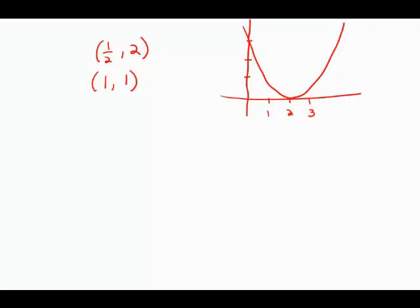First of all, the question tells us about two points that are on the graph: one half comma two, and one comma one. Then it tells us this crucial piece of information: the graph is symmetric with respect to the vertical line at x equals two.